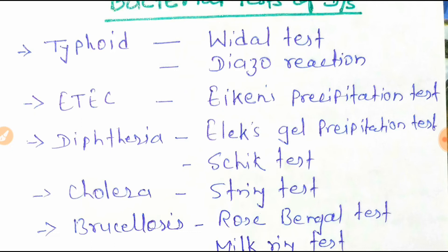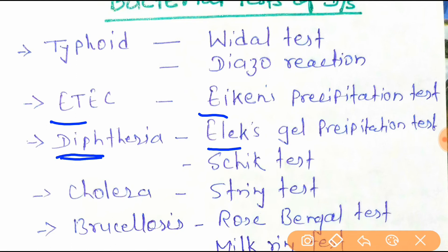For the ETEC Elek test, remember 'EE — Elek test.' Next is the diphtheria test — you can easily remember by the mnemonic 'ELMACHLI,' meaning 'ELF FISH.' ELF FISH goes deep to the sea, so diphtheria uses the Elek gel precipitation test.